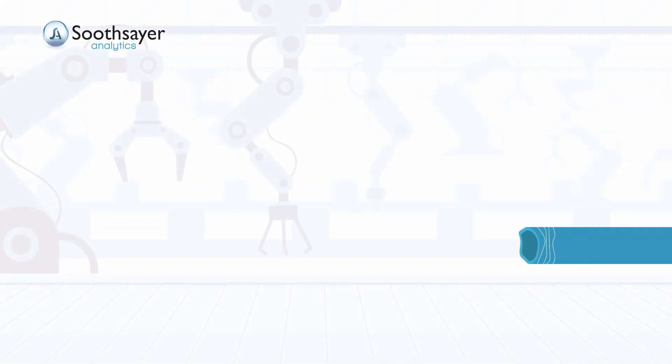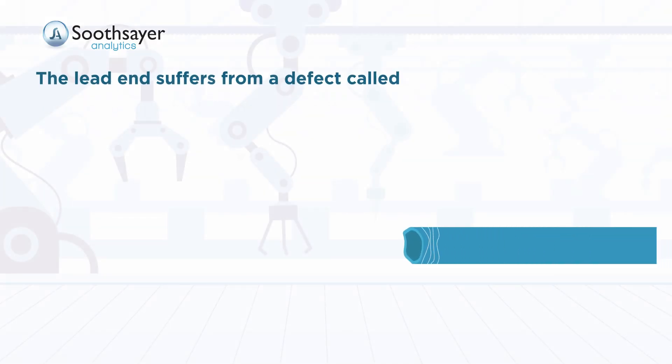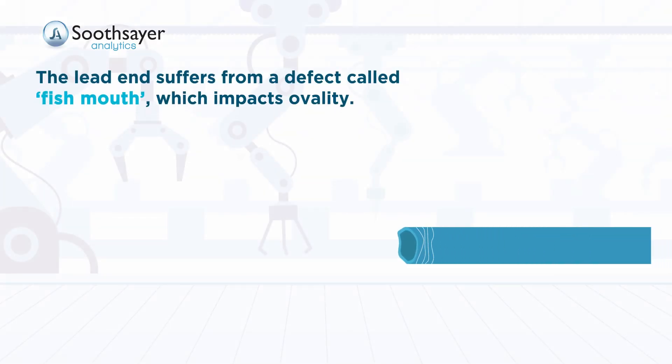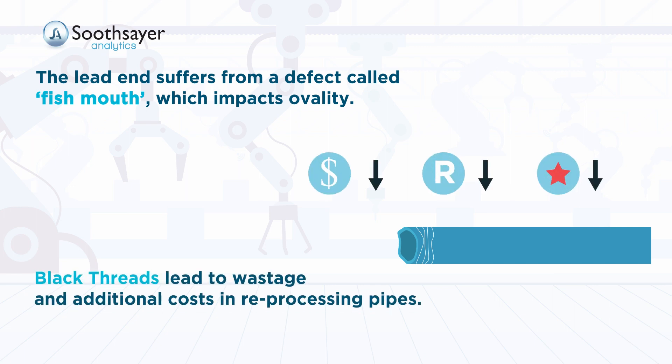The lead end suffers from a defect called fish mouth, which impacts ovality. This leads to threading defects towards the end of the process known as black threads. Black threads lead to wastage and additional costs in reprocessing pipes.